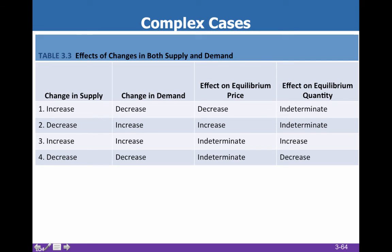Then we have these complex cases. In AP Economics, we don't do simultaneous shifts of supply and demand — there will always be one or the other. And you can see these indeterminants are the reason — you can't predict when there's a double shift what's going to happen. Sometimes there will be a question that says something like: if supply and demand both increase, then what do we know will happen? And the answer would be we know that the equilibrium quantity will increase, but we're not sure about the price. Filling out this chart was actually an AP multiple choice question, but it's relatively unusual.